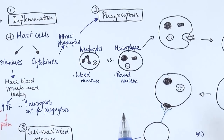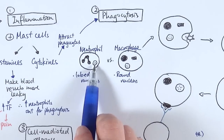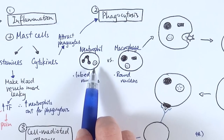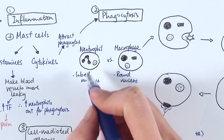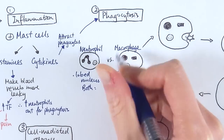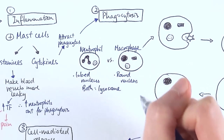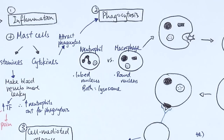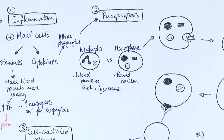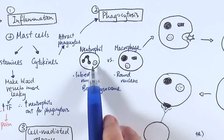Both neutrophils and macrophages have lysosomes — specialised vesicles that contain hydrolytic enzymes called lysozymes, which are proteases, lipases, and carbohydrases. This is because all pathogens and living cells are made up of proteins, lipids, and carbohydrates, so these enzymes can digest them all. Both cell types share this feature.